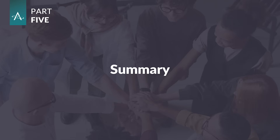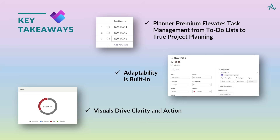We have seen how Planner Premium takes a basic task list and turns it into a project command center — from assigning the right tasks to the right people, to tracking progress, and using built-in visuals to spot issues before they derail the timeline. It's all about visibility and control. Remember, it's not just about having a plan; it's about having the tools to adjust that plan when things inevitably change. If this looks like the kind of structure your team needs, let's talk. Advisacon can help you roll it out, train your users, and customize the setup. With features like timeline views, dependencies, labels, goals, and charts, Planner Premium empowers project managers to manage complexity without being overwhelmed. Whether a task needs paused, resources need changed, or schedules need adjusted, Planner Premium supports the realities of project life. Built-in charts and graphs help assess status, workload, and project health.